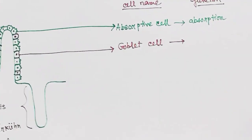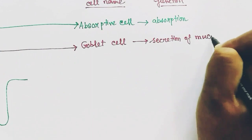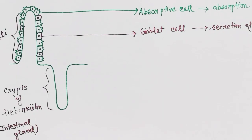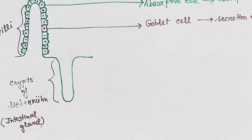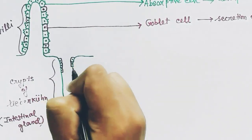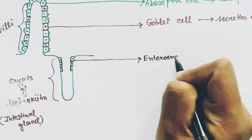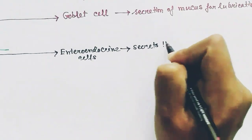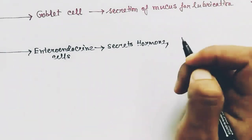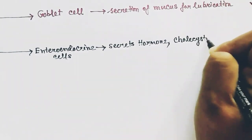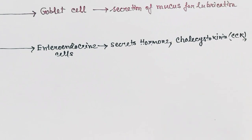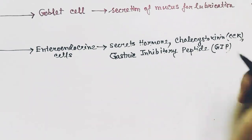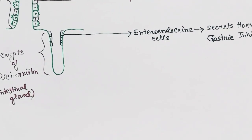These are the goblet cells. Goblet cells secrete important hormones — specifically cholecystokinin (CCK) and gastric inhibitory peptide (GIP).